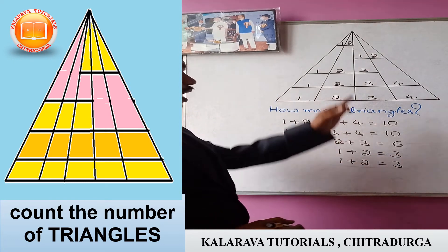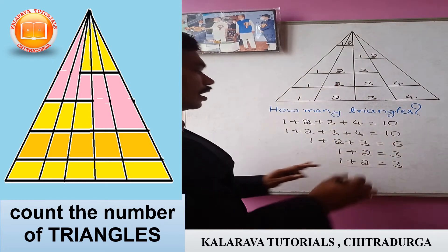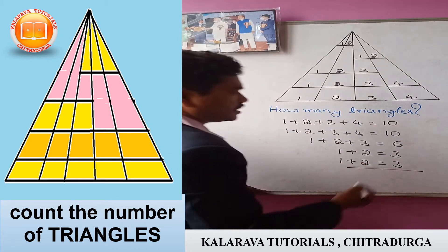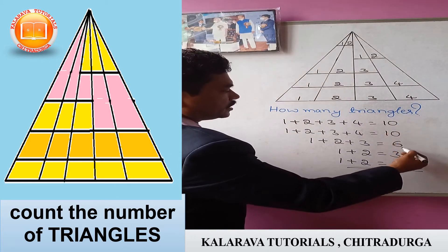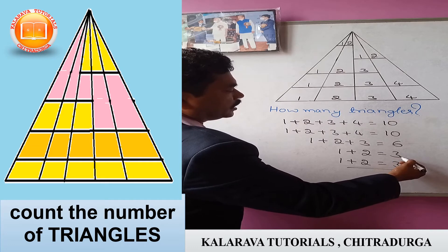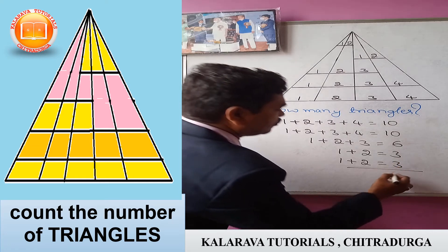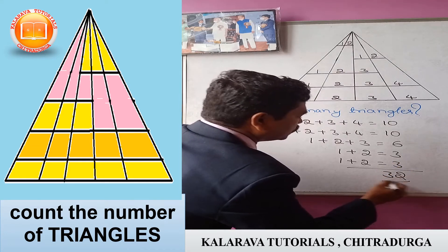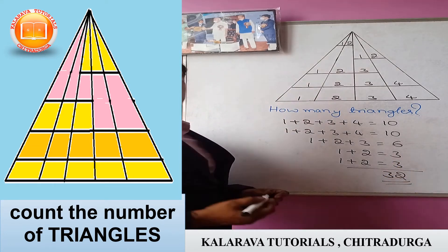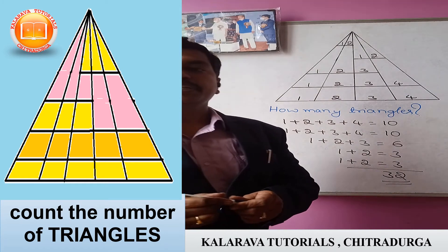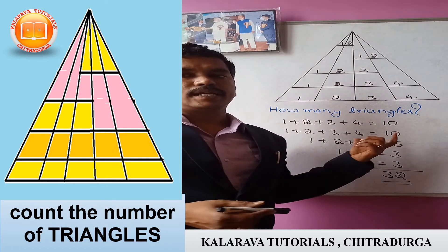Now we have to add all the number of triangles: 10 plus 10 is 20, plus 6 is 26, 26 plus 3 is 29, 29 plus 3. There are 32. So in this diagram, there are 32 triangles.